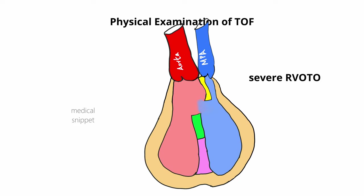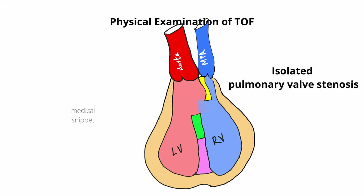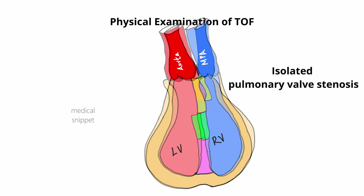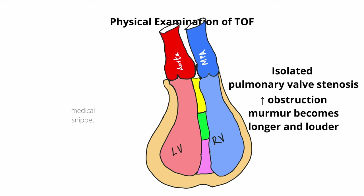The reason is that in TOF, as the RVOT obstruction increases, more blood is shunted into the aorta via the VSD, so less blood flows across the RVOT, making the murmur softer and shorter. In case of isolated pulmonary stenosis, as the obstruction increases, the murmur becomes longer and louder, because there is no VSD and blood has to flow via the obstructed RVOT.